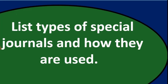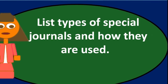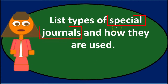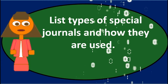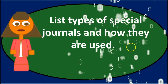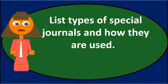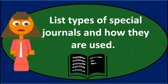When we're thinking about special journals, we're typically thinking about journals that would be used in more of a manual system rather than an automated system. The goal of special journals is to lessen the data input process throughout the time period in order to do things faster and more efficiently.